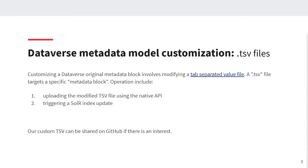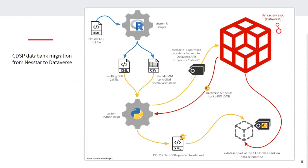The operation is done in several steps. First, you need to upload the modified TSV file using the native API. Once you do that, a Dataverse admin has to trigger a SOLR index so that the latest metadata configuration is taken into account by the search engine. Here's how we processed our Nesta databank to be aligned with the CMM before being ingested by Dataverse: we started by transforming Nesta DDI 1.2 metadata files using custom R scripts, which produced DDI 2.5 files and a separate CSV file for controlled vocabularies.